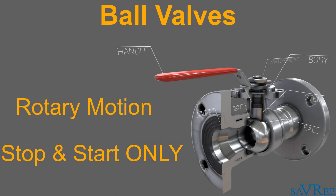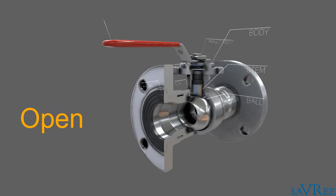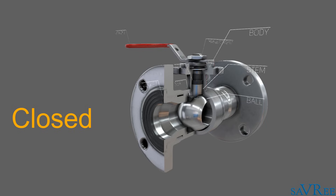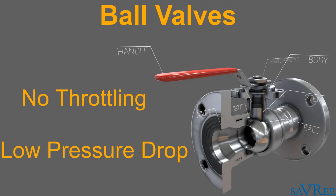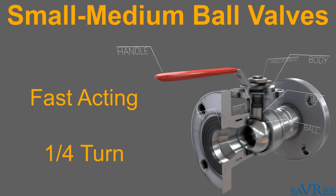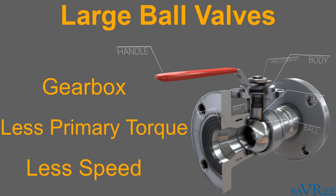A ball valve is a rotary motion valve that uses a ball-shaped disc to stop or start flow. When the valve handle is turned to open the valve, the ball rotates to a point where the hole through the ball is in line with the valve body inlet and outlet. When the valve is shut, the ball is rotated so that the hole is perpendicular to the flow opening of the valve body and the flow is stopped. Ball valves are not suitable for throttling or regulating flow. The pressure drop across ball valves when fully open is very low. Small to medium sized ball valves are fast acting quarter turn valves. Larger ball valves employ a planetary gearbox, which allows the use of a relatively small hand wheel and operating force to operate a fairly large valve.